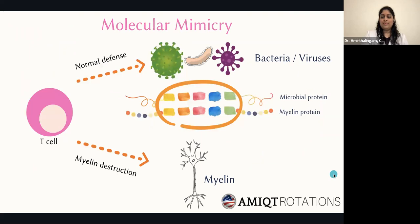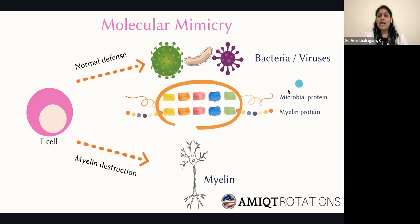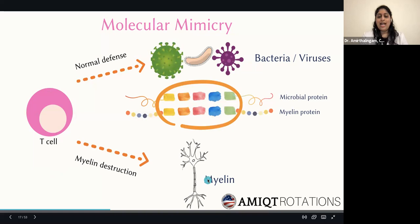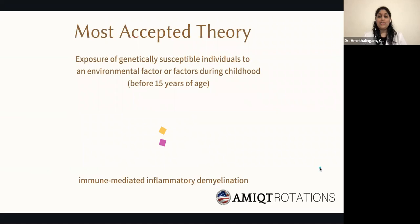This concept is called molecular mimicry. In a normal situation, a T cell mounts an immune response against bacteria and viruses. However, the microbial protein's genetic makeup may be identical to that of the myelin protein. When this occurs, the T cell cannot differentiate between bacteria and myelin, thinking myelin is also foreign. An immune response is then mounted against myelin, starting the destruction and demyelination process seen in multiple sclerosis. The most accepted theory is that exposure of a genetically susceptible individual before age 15 to environmental factors increases the risk of immune-mediated inflammatory demyelination.